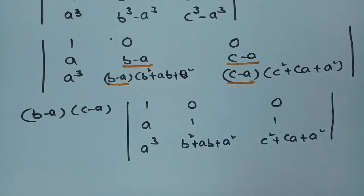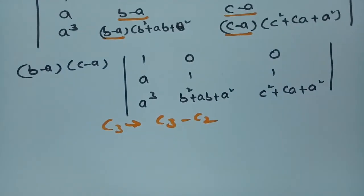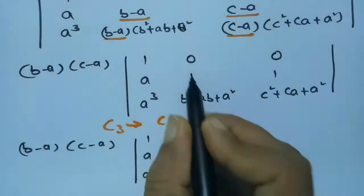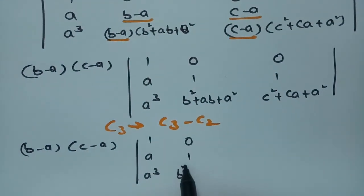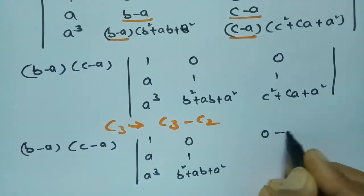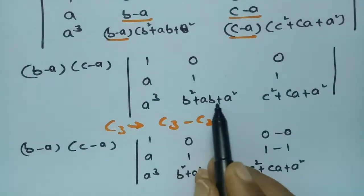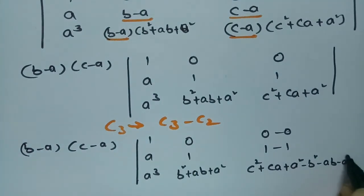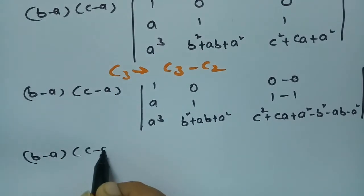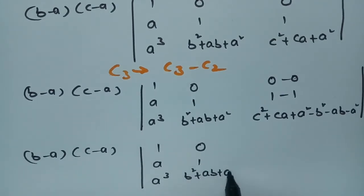Next, I apply the operation C3 minus C2. Column 1 stays as 1, a, a³. Column 2 stays as 0, 1, b²+ab+a². For column 3, C3−C2 gives: 0−0=0, 1−1=0, and (c²+ac+a²)−(b²+ab+a²) = c²−b²−ab+ac = c²−b²+a(c−b).